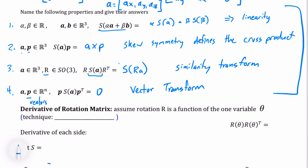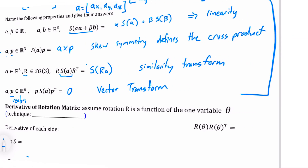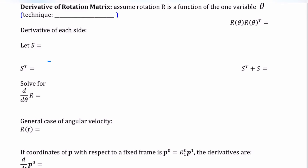Next we want to take the derivative of a rotation matrix. We'll assume R is a function of a single variable theta, written R(theta), and we'll generalize later. The technique is to assume the answer — specifically we assume the derivative has the skew-symmetric property. We start from the fact that any rotation matrix multiplied by its transpose gives the identity, since the transpose equals the inverse.